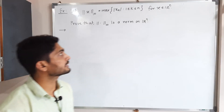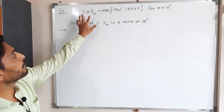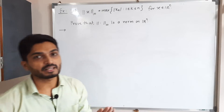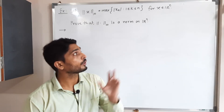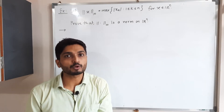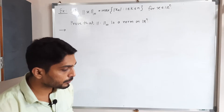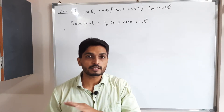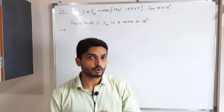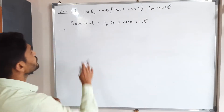Let us discuss this example. The norm infinity is defined by taking the maximum on ℝⁿ, and we have to prove that it is a norm on ℝⁿ. That means we have to prove that norm infinity satisfies those four properties of a norm.